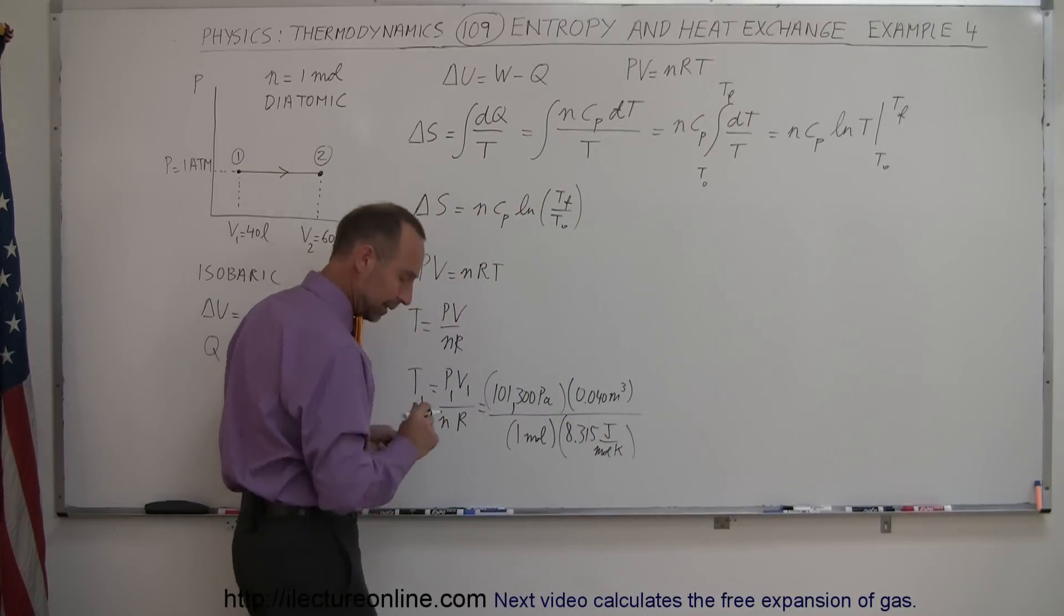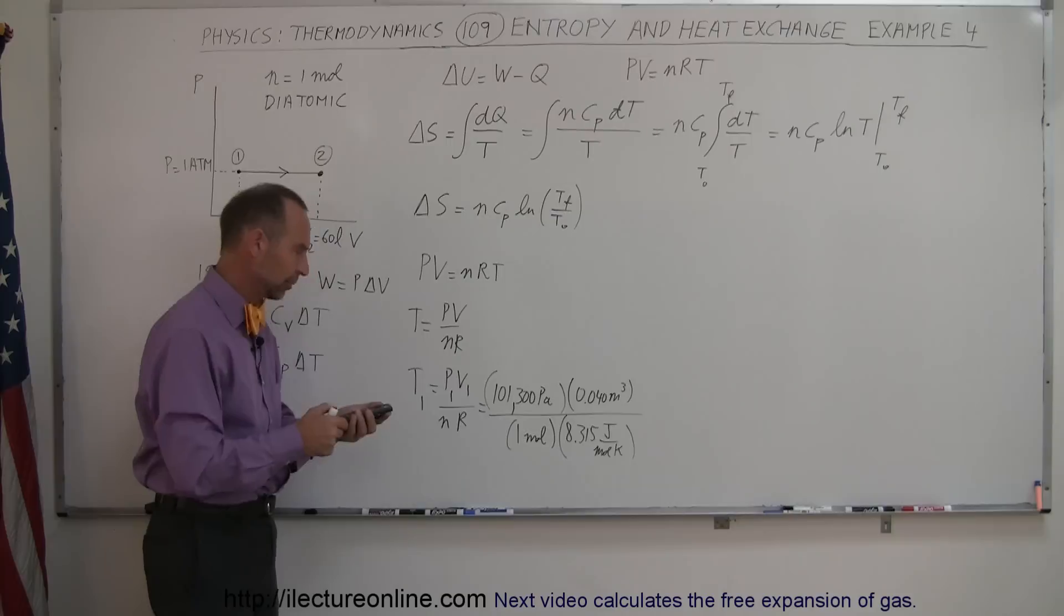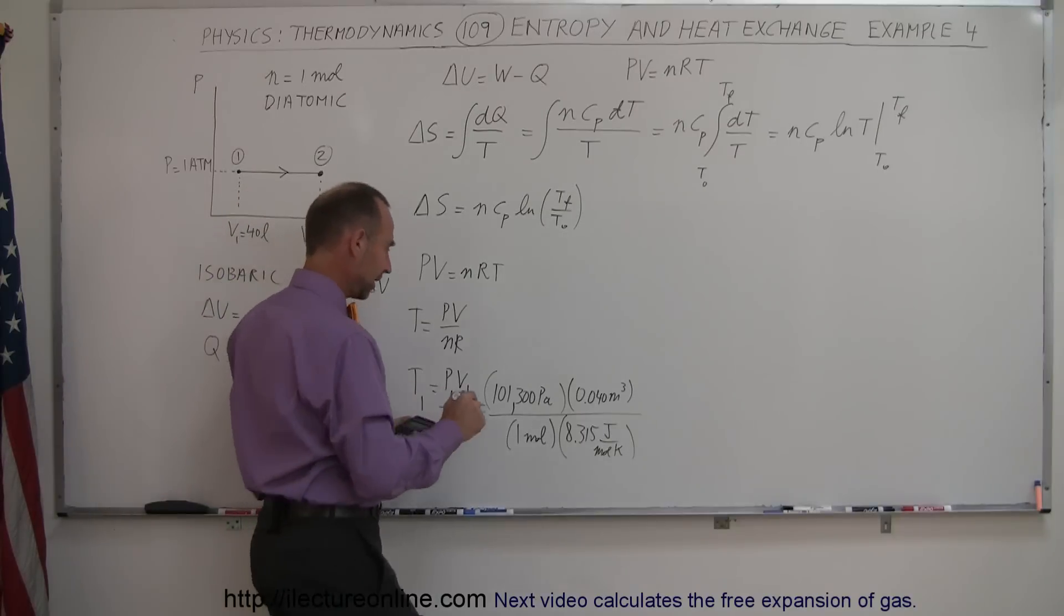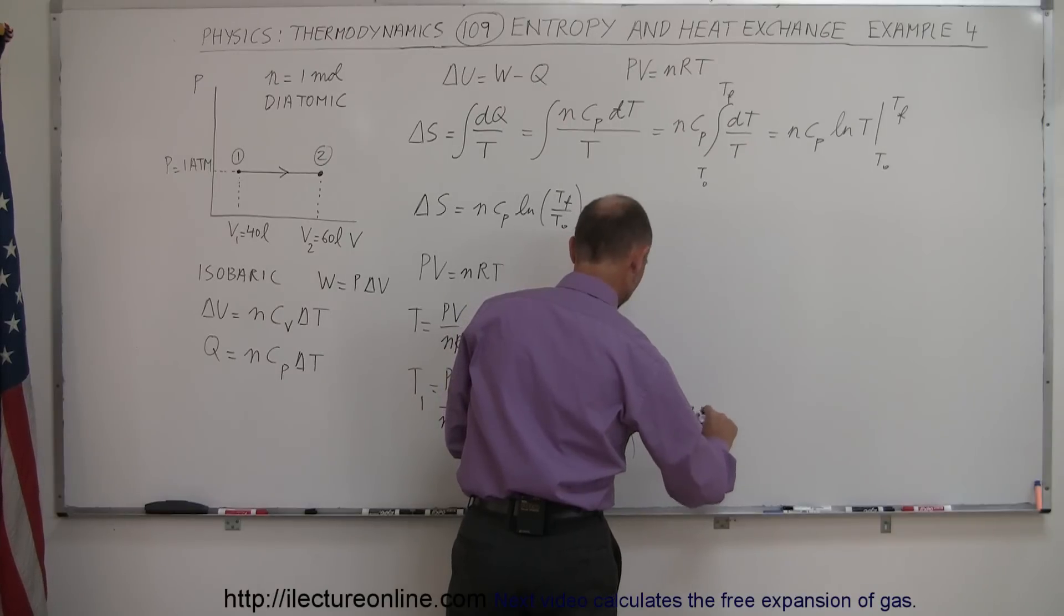And of course, that will come up in Kelvin degrees, so let's find out what that's equal to. So 101,300 times 0.04 divided by 8.315 equals, and it looks like it starts at a temperature of 487 Kelvin.